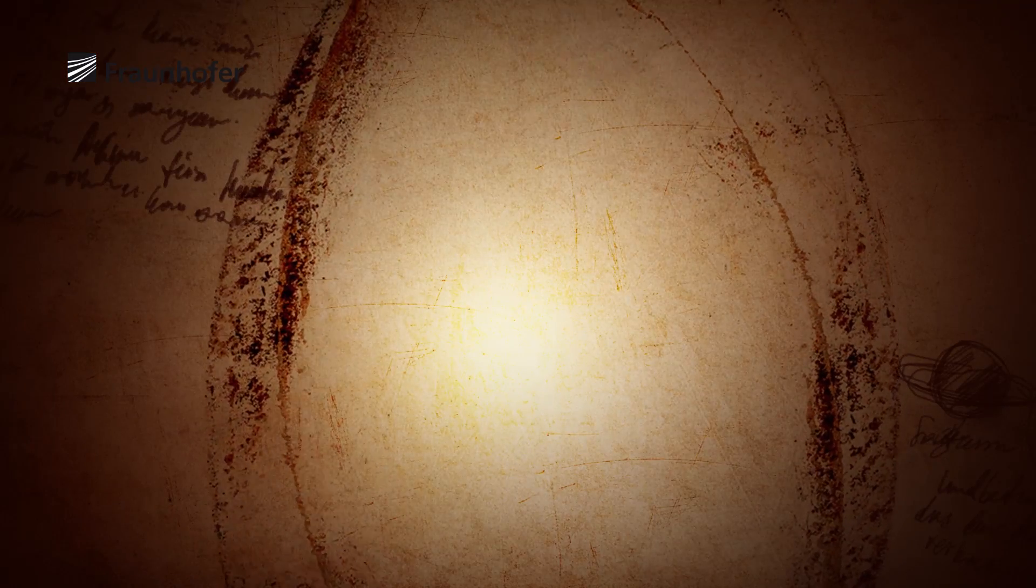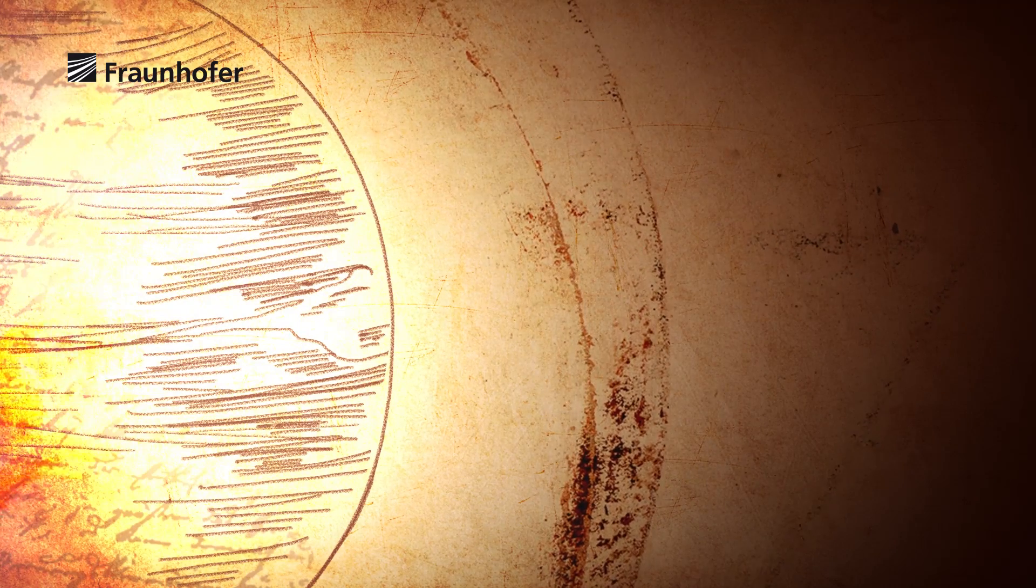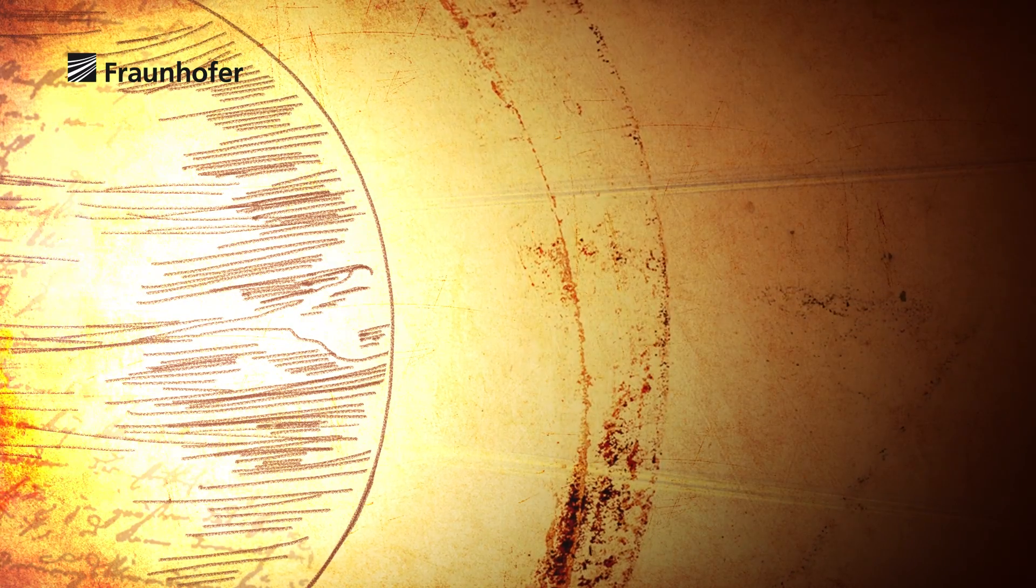But how are the dark lines generated? By means of nuclear fusion, the sun produces an unimaginable amount of energy that emerges on its surface as light.